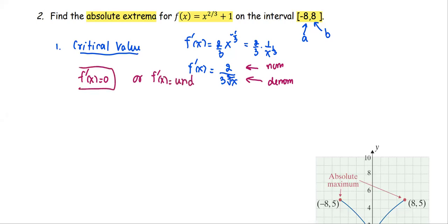The case of f' equals zero is from the numerator of the expression equals zero. The case of the undefined case is going to be from the denominator equals zero. In this case, the numerator is 2, if 2 equals zero,